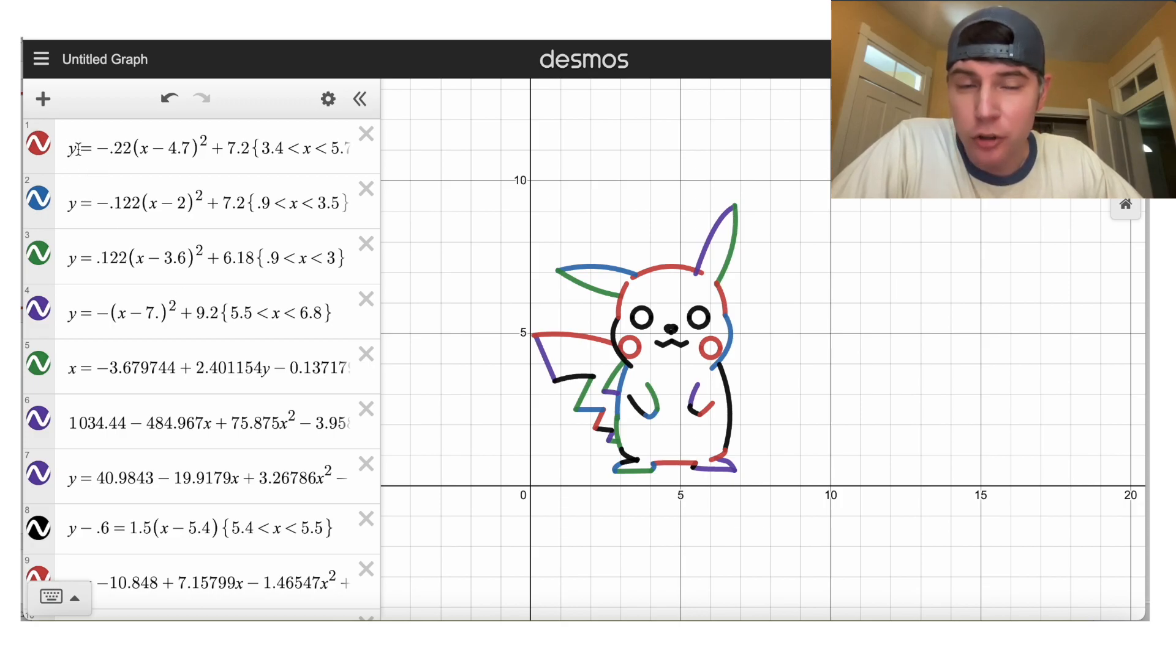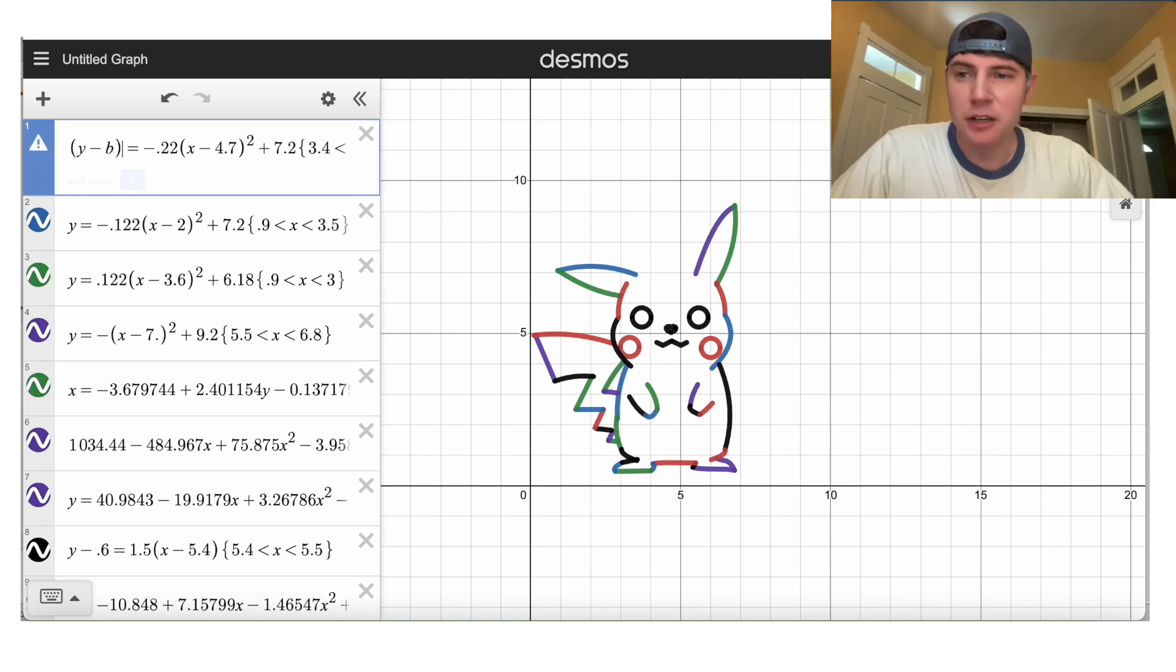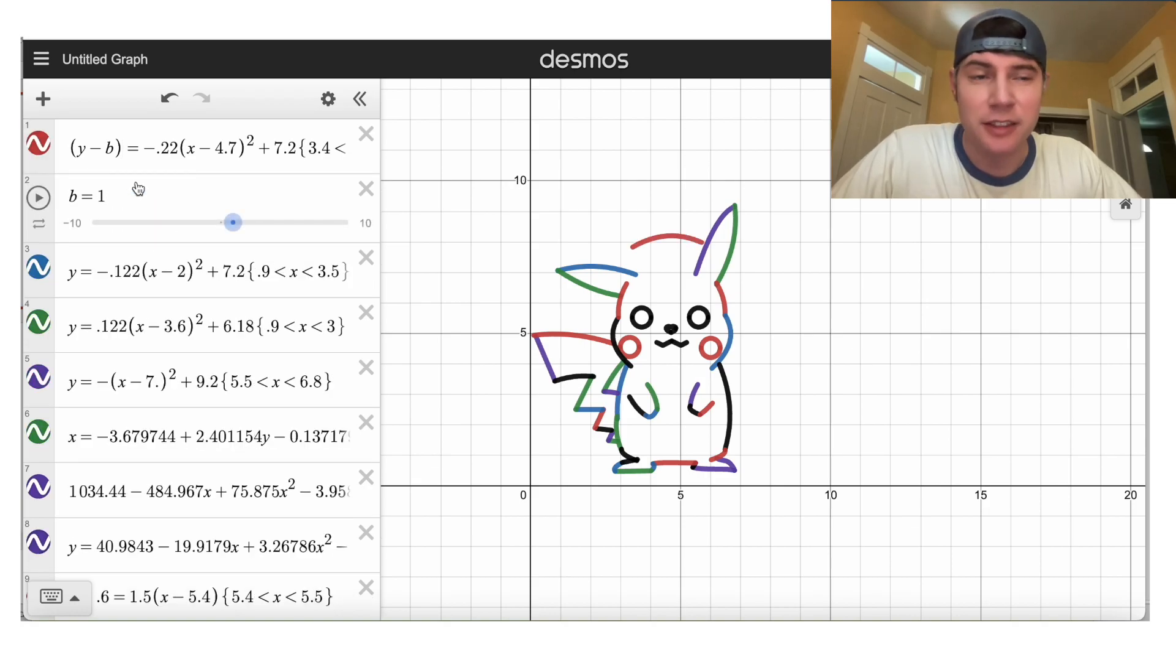we need to change all the Ys into Y minus B. So we'll put parentheses around it, we'll say Y minus B, close the parentheses, and it asks us to add a slider. Click on the B to add the slider.